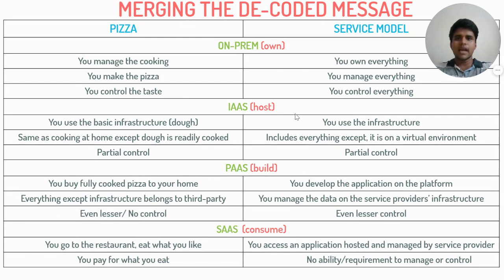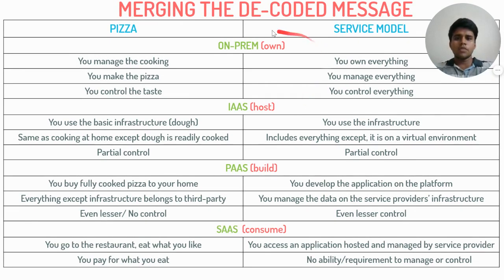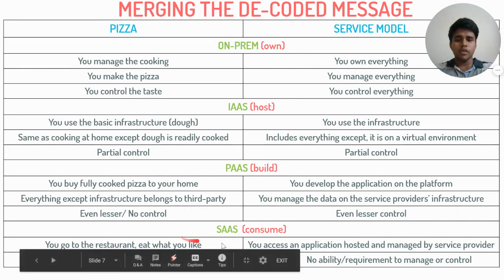An obvious question arises: why would anyone choose other service models over on-premise when there is reduction in control? When we own and manage everything locally, there is a huge amount of fixed cost commitment involved. On the other hand, when we let third-party vendors manage these, the cost can be shared with other users — of course with the catch that data security issues need to be managed. To summarize: the most preferred method would be on-premises, provided we can accommodate the fixed costs. The easiest method is Software as a Service. IaaS and PaaS are in-between tweaks between control and cost.